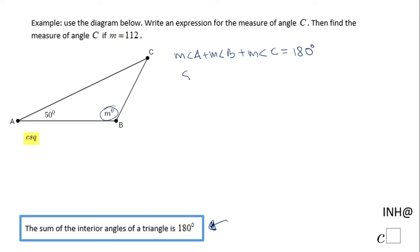Now we're going to replace the measure of angle A with 50 degrees, the measure of angle B with M, and the measure of angle C stays because we want to write this expression for this angle. In order to